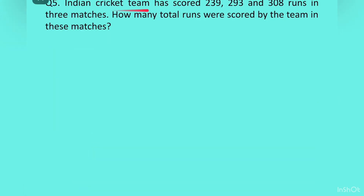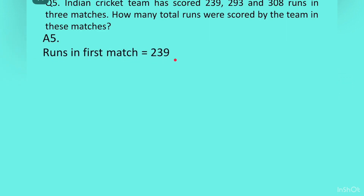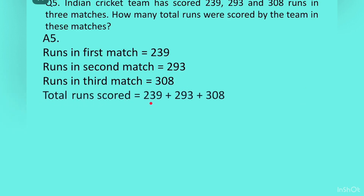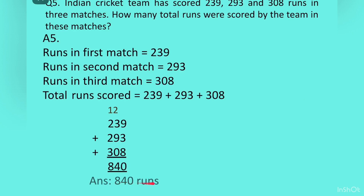Question 5. Indian cricket team has scored 239, 293 and 308 runs in three matches. How many total runs were scored by the team in these matches? We write: runs in first match 239, runs in second match 293, runs in third match 308. Total runs scored is equal to 239 plus 293 plus 308. Writing them one below the other and adding gives 840. Answer: 840 runs.